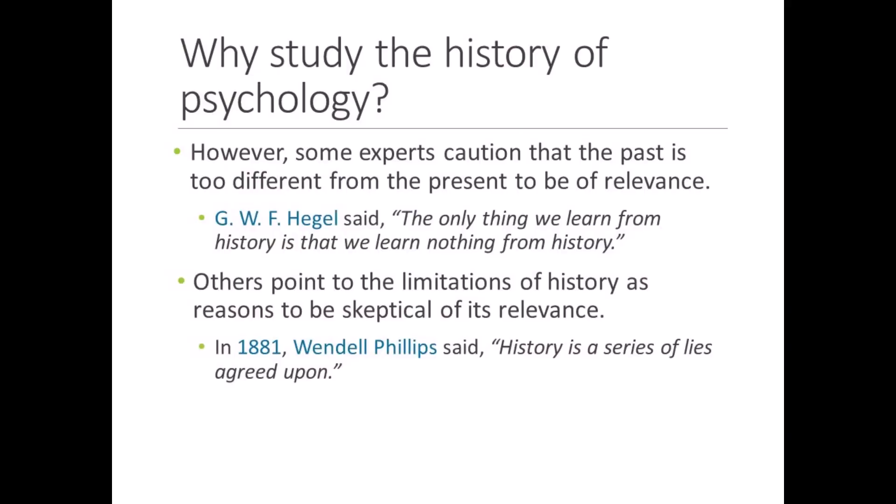Experts also recognize that the study of history is imperfect. They'd argue that the past is too different from the present to be relevant to modern times. Because the contexts are different, what we learn from the past doesn't help us address today's problems. G.W.F. Hegel, a German philosopher, made this point when he wrote, "The only thing we learn from history is that we learn nothing from history." Other experts point to the biases inherent in the study of history. In 1881, Wendell Phillips, an American attorney and abolitionist, wrote, "History is a series of lies, agreed upon." This quote highlights the dynamic nature of history — our understanding of the past changes as we gain access to new artifacts and evidence, and it can also change based on who is doing the interpreting, how they were educated and trained, their motives, and so on.